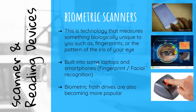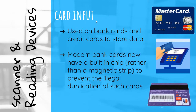Biometric scanners: This technology measures something biologically unique to you, such as fingerprints or the pattern of the iris of your eye. They are built into laptops and smartphones — either as a fingerprint reader or facial recognition. Biometric flash drives are also becoming more popular. Card input: Used on bank cards and credit cards to store data. Modern bank cards now have a built-in chip rather than a magnetic strip to prevent illegal duplication.